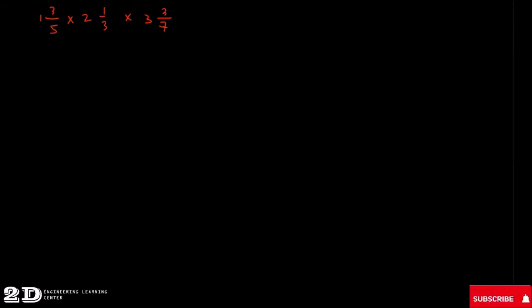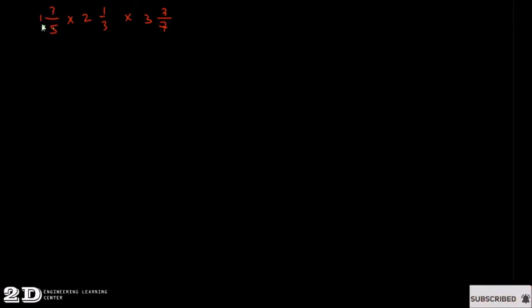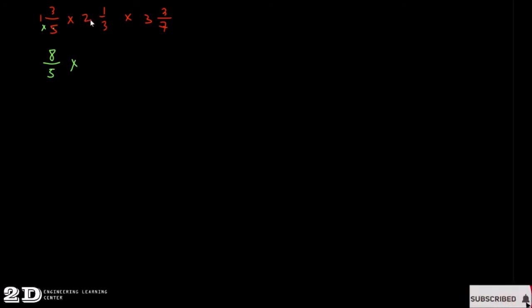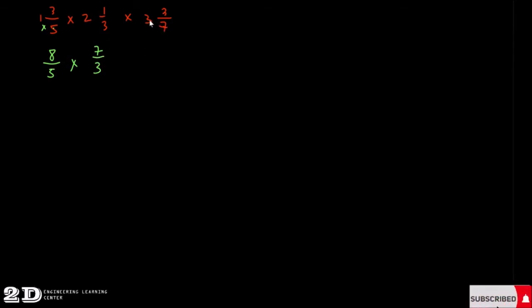First, convert the mixed numbers into improper fractions. Multiply the denominator by the whole number then add the numerator. So 5 times 1 plus 3 equals 8, giving 8/5. Then 3 times 2 plus 1 equals 7, giving 7/3. Then 7 times 3 plus 3 equals 24, giving 24/7.